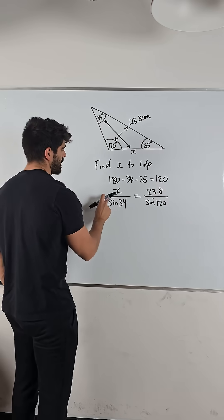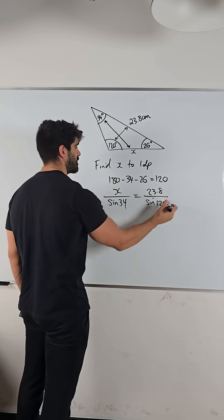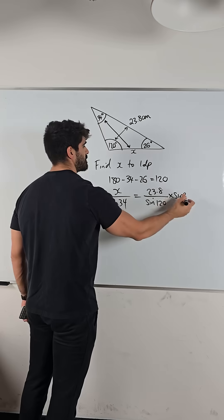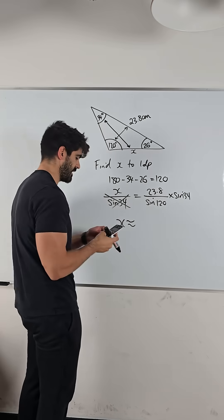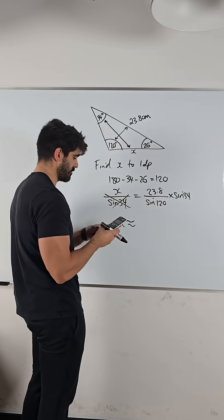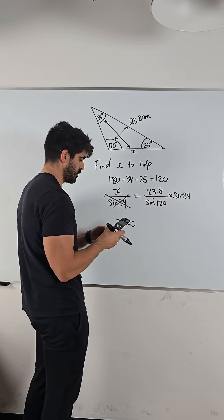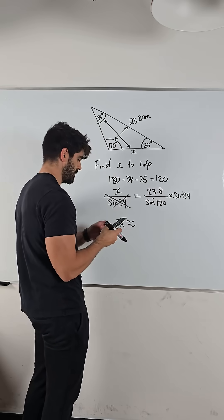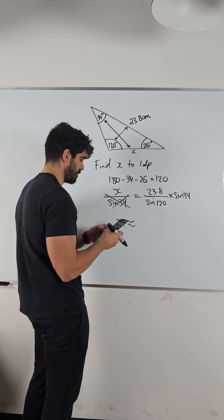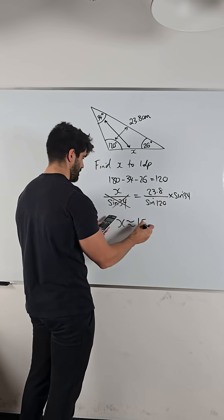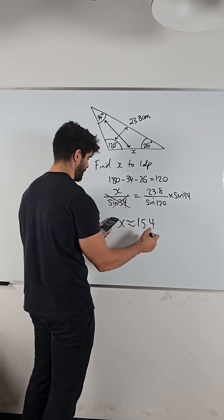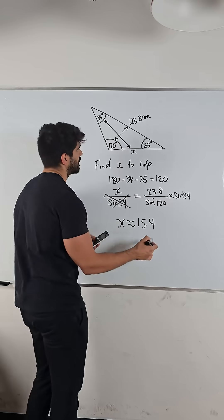So the last thing we need to do is rearrange for x. We're going to do the opposite of dividing by sine 34, which is to times both sides by sine 34. So x is approximately 23.8 over sine 120 times sine 34. So about 15. So 1 decimal place, 15.4 centimeters.